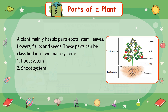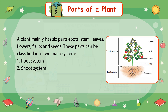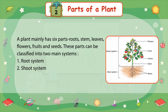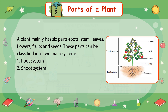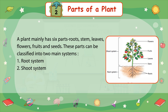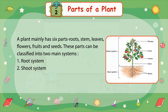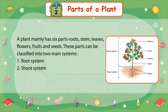A plant mainly has six parts: roots, stem, leaves, flowers, fruits, and seeds. These parts can be classified into two main systems: the root system and the shoot system.